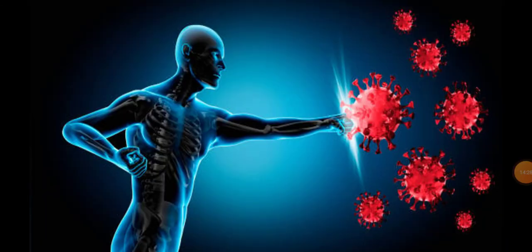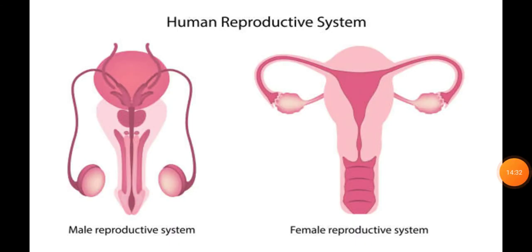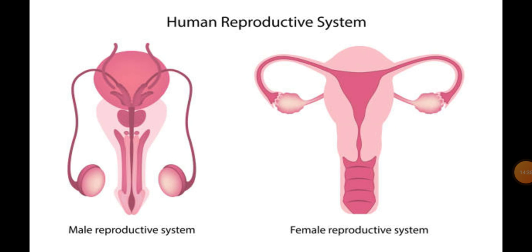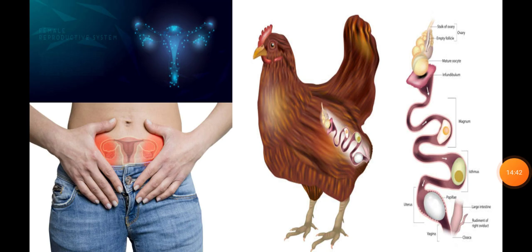Our last organ system is the reproductive system, through which young ones are produced. As nature creates different patterns of reproductive system, different animals show different reproductive patterns.